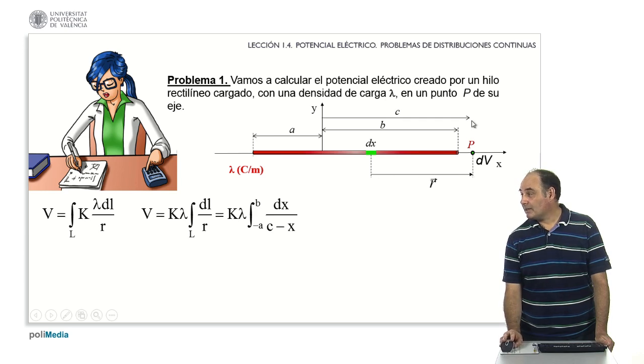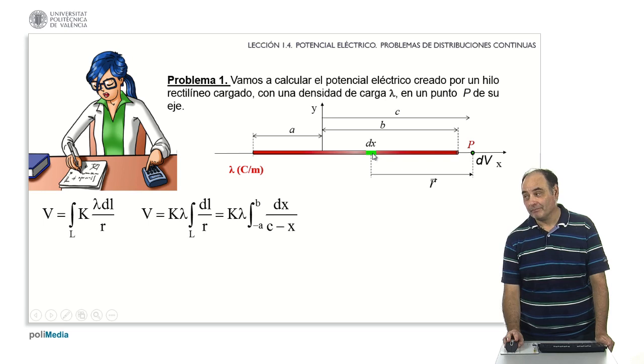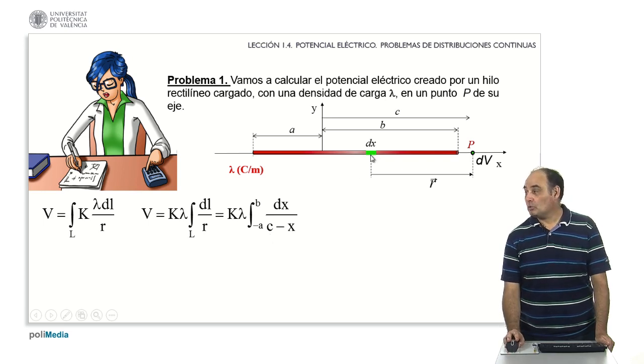You can see that this ray measures c minus the x coordinate of the green segment. So this is my integral. Between which points?